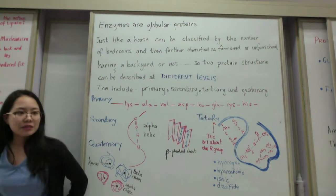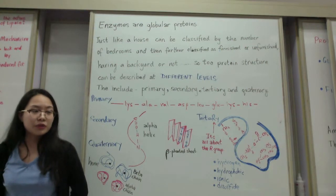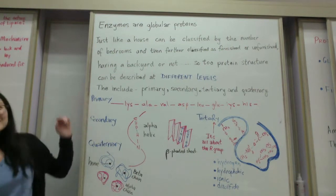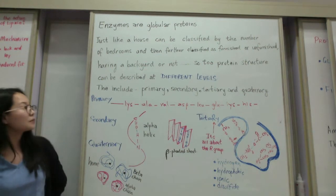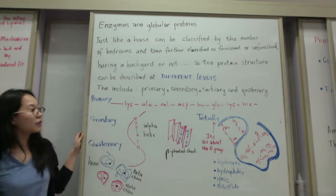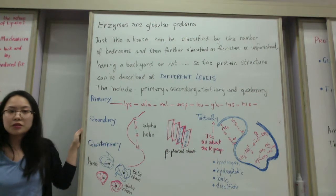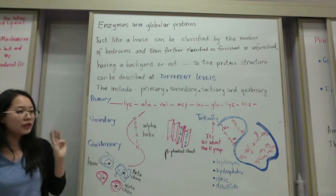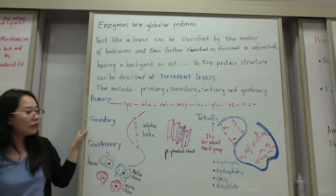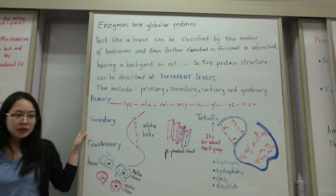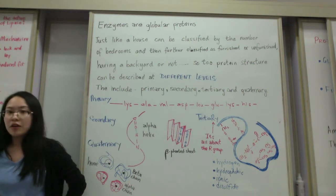Enzymes and proteins have specific shapes that cause specific functions, so shape is really crucial to how an enzyme works. Proteins can have specific structures at different levels: primary, secondary, tertiary, and quaternary. The primary structure is the sequence of amino acids determined by transcription and translation of DNA — three codons code for one amino acid, joined by peptide bonds. The secondary structure involves hydrogen bonds between the amine and carboxylic groups (C=O and H-N), and has two types: alpha helix and beta pleated sheets.